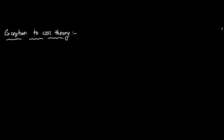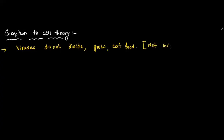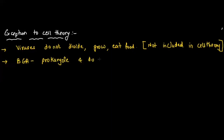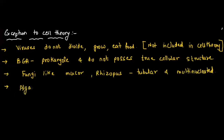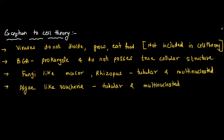Exceptions to the cell theory include viruses, which were not given any place in cell theory because they do not divide, do not grow, do not eat food, and are on the threshold of life — neither living nor dead. BGA (blue-green algae, also known as cyanobacteria) is a prokaryote that does not possess a true cellular structure — no cell organelles and no well-developed nucleus. Fungi like Mucor and Rhizopus are tubular and multi-nucleated. Algae like Vaucheria are also tubular and multi-nucleated, which are exceptions since cell theory states each cell should have one nucleus.